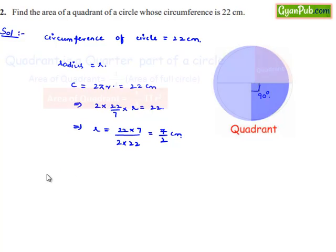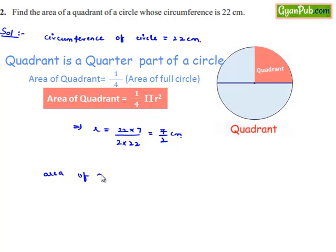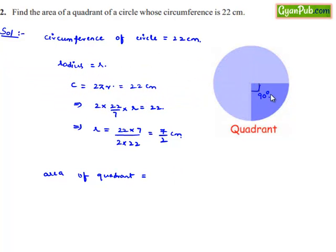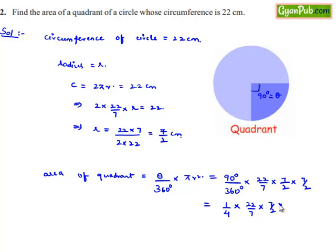But he asks us to find the area of the quadrant. Area of the quadrant will be equal to, we have the area of sector which has the angle theta at the center as theta by 360 degrees into πr squared. So 90 by 360 into πr squared is 90 by 360 is 1 by 4 into 22 by 7 into 7 by 2 into 7 by 2.